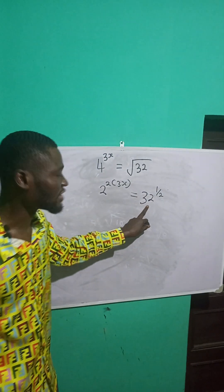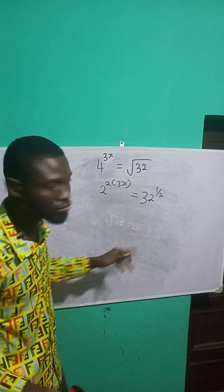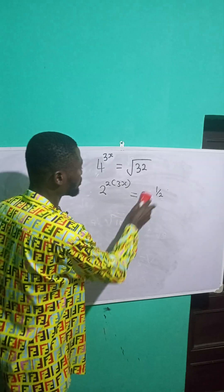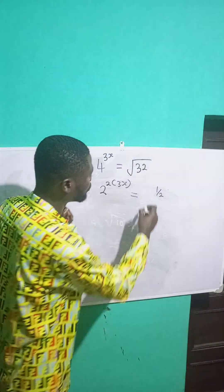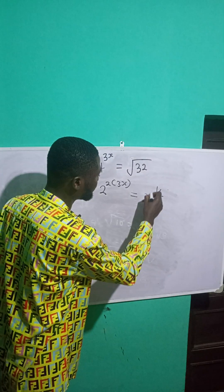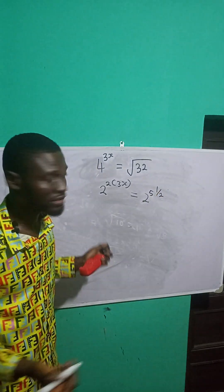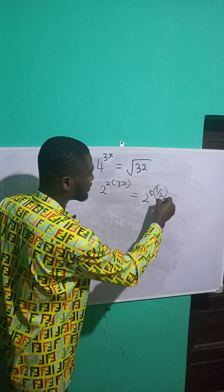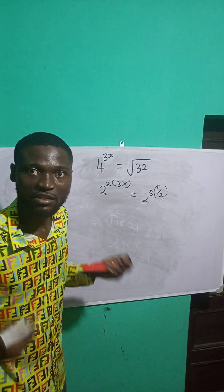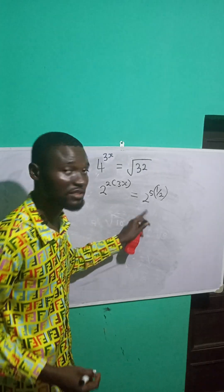But I can still make 32 have a base of 2. So 32 is the same as 2 raised to power 5. 2 raised to power 5 will give me 32. So this will multiply the already existing exponents. Now they have the same base.